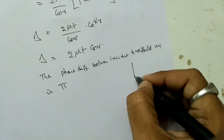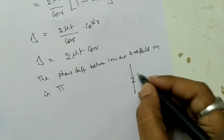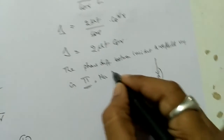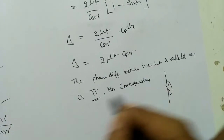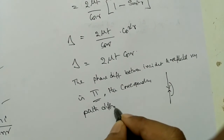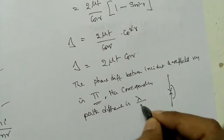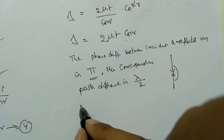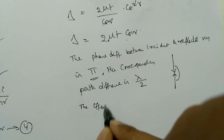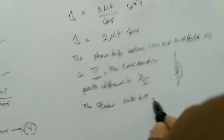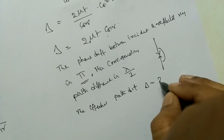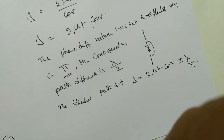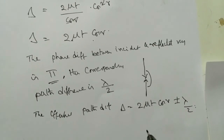The phase difference between the incident and reflected ray is π (180 degrees), because the ray reflects from the denser medium. The corresponding path difference is λ/2. We must add this path difference to the geometric path difference.